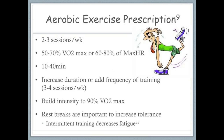Aerobic exercise for people with MS should begin two to three times a week at 60 to 80% of maximum heart rate for about 10 to 40 minutes at a time. Duration, intensity, and frequency can increase as patient tolerance increases, but rest breaks are important since intermittent training has been found to increase overall physical activity tolerance in people with MS.